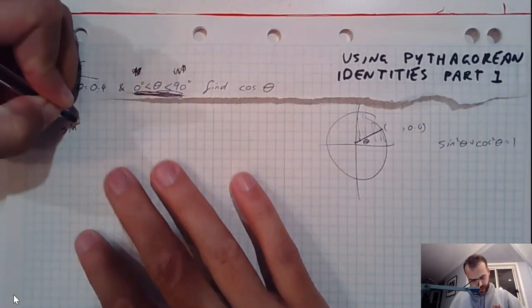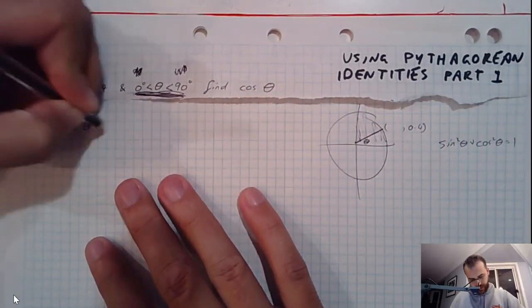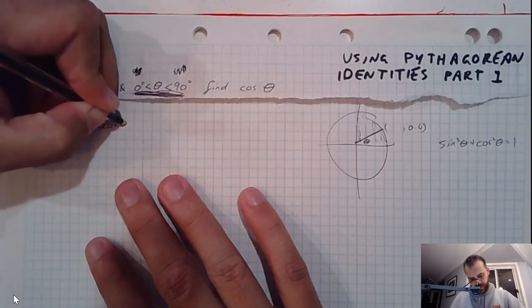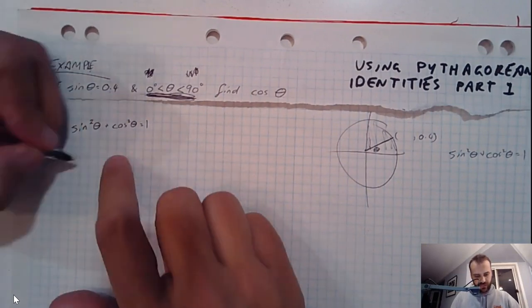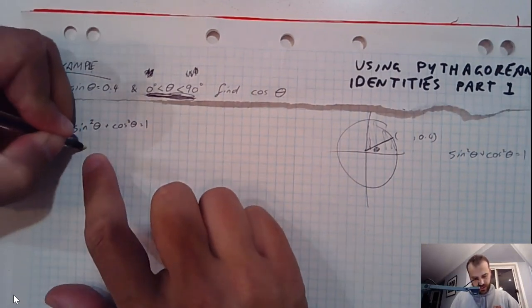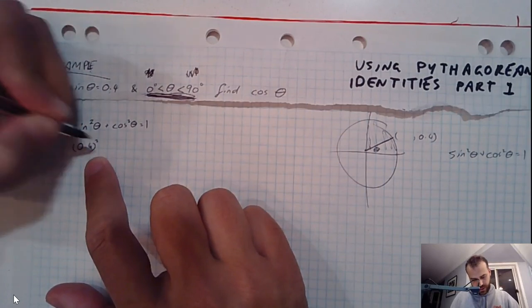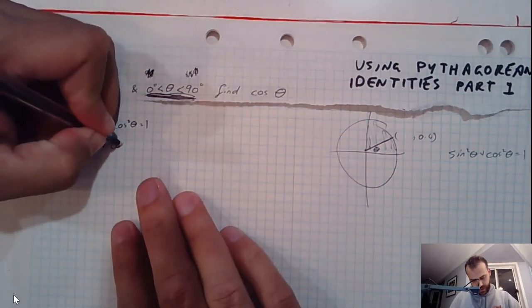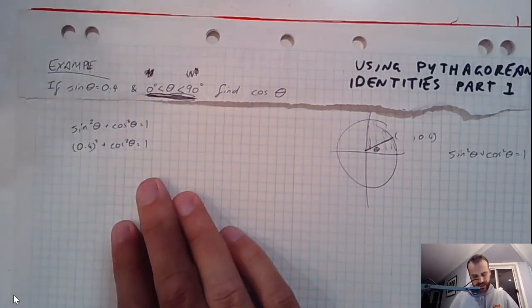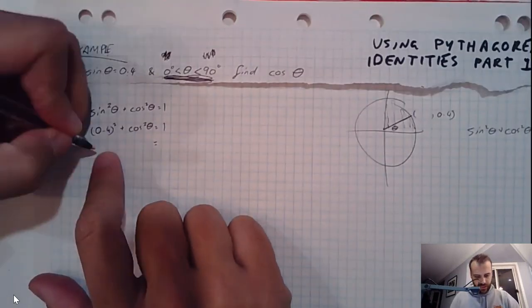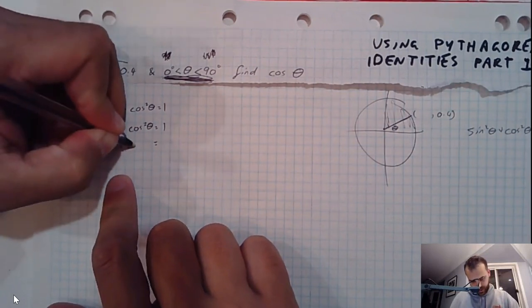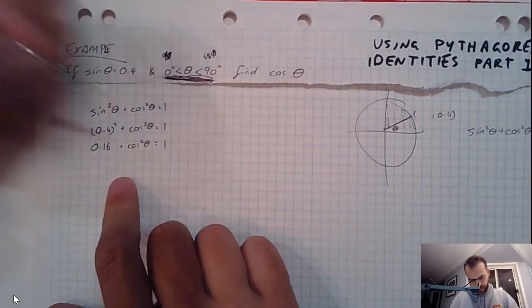So sine squared theta plus cos squared theta equals 1. Now we've got a sine theta of 0.4, so sine squared theta is going to be 0.4 squared, and this is cos squared theta, and that's equal to 1. Okay, that's 0.16 plus cos squared theta equals 1.